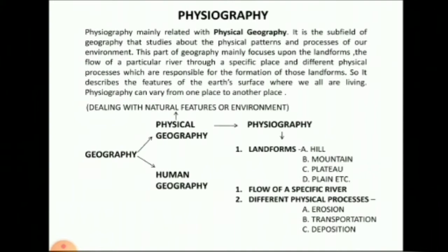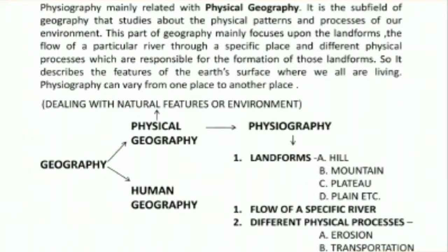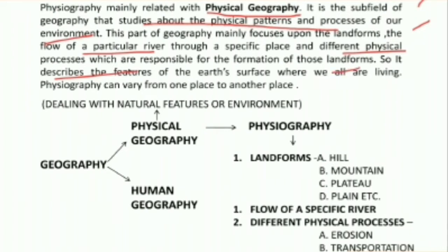Let's start with the term physiography. Physiography is mainly related with physical geography. It is the subfield of geography that studies the physical patterns and processes of our environment. This part of geography mainly focuses upon landforms, river flow, and different physical processes which are responsible for the formation of different landforms. So it describes the features of the earth's surface.